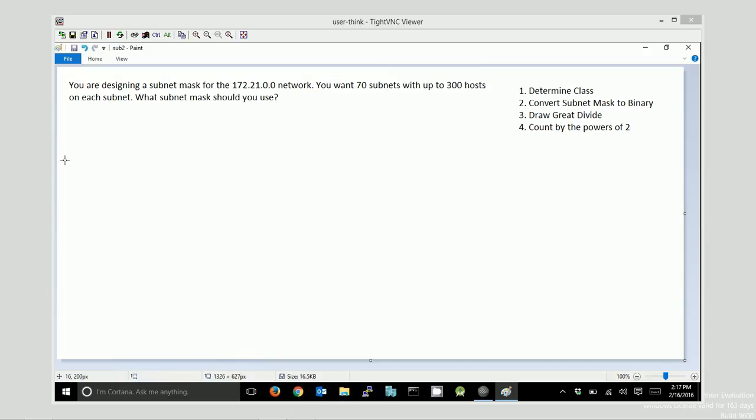In this video, we're going to solve a subnetting problem. You're designing a subnet mask for the 172.21.0.0 network, and we want 70 subnets with up to 300 hosts on each subnet. Those are going to be usable hosts. Which subnet mask should we use?